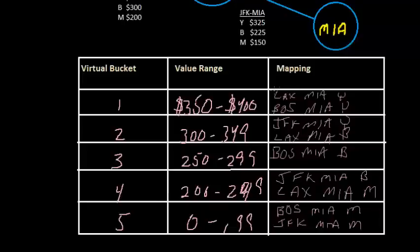So I completed this mapping for you. Now we have the nine different itineraries mapped to five different virtual buckets instead of the three different fare classes that we had before. So you can see we're going to get a finer level of inventory control here. And I see we're running kind of long, so we'll pick this up in the next video.